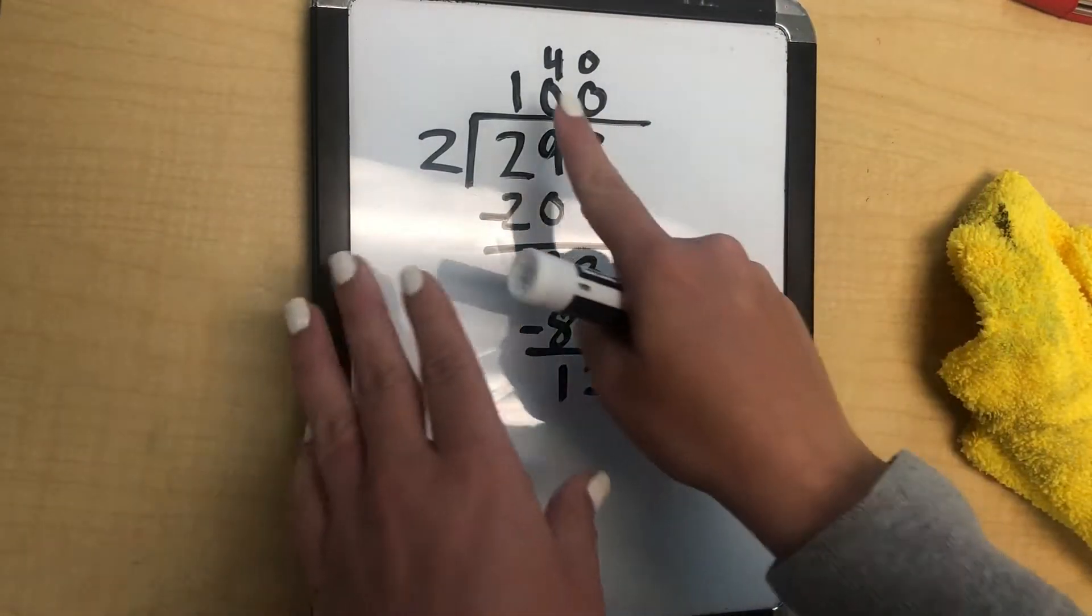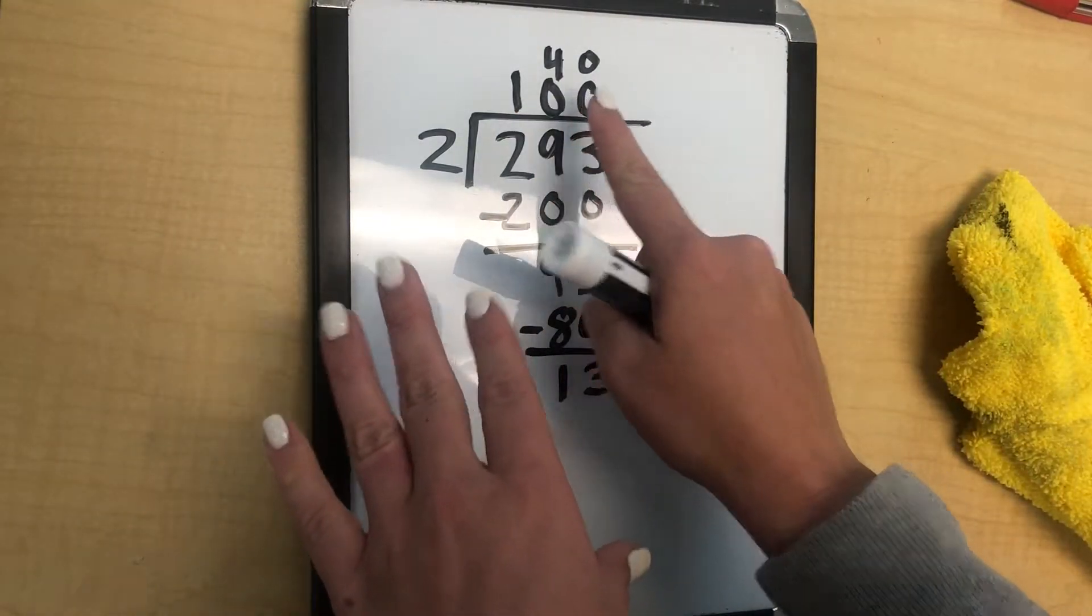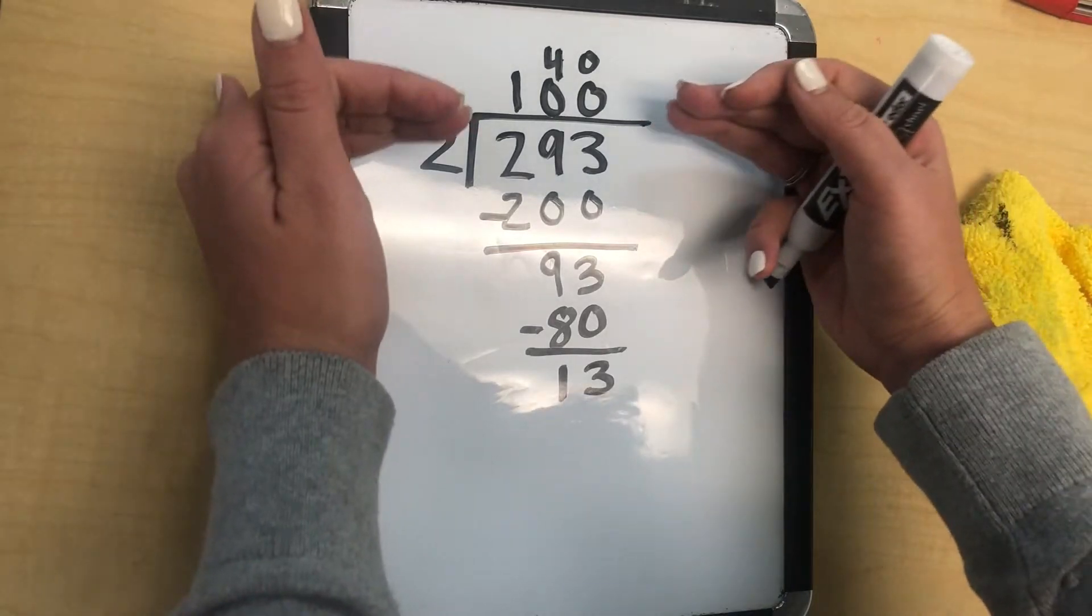So the traditional way, we would have just written 1 and 4 here. But instead, we're now breaking it up by the place value.